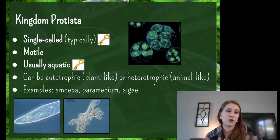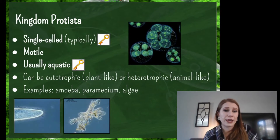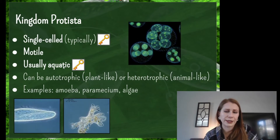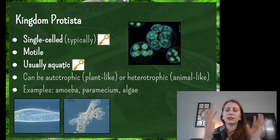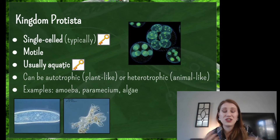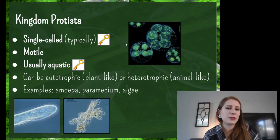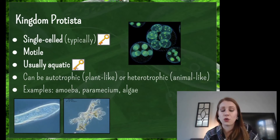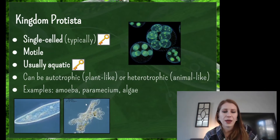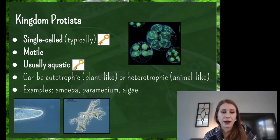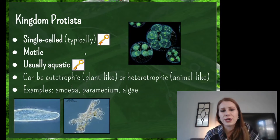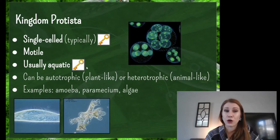The big keys for Kingdom Protista are that they're single-celled and usually aquatic. A lot of times kingdoms share characteristics, so I'm picking the ones that make each stand out. If something is single-celled, eukaryotic, and lives in water, you'd say that's a protist. Those are the two keys I want you to remember for sure.